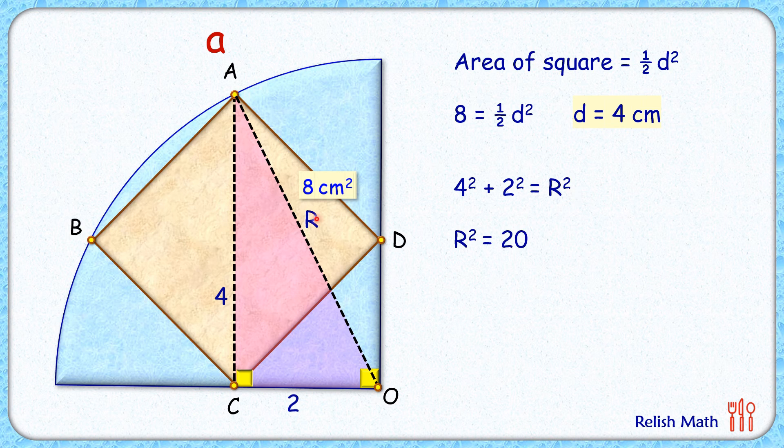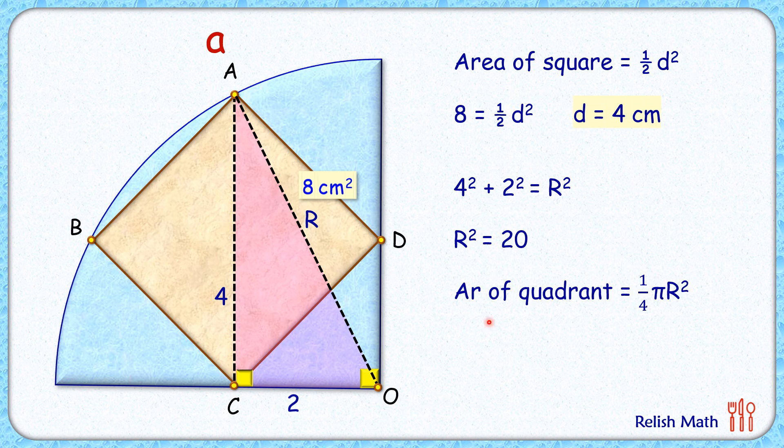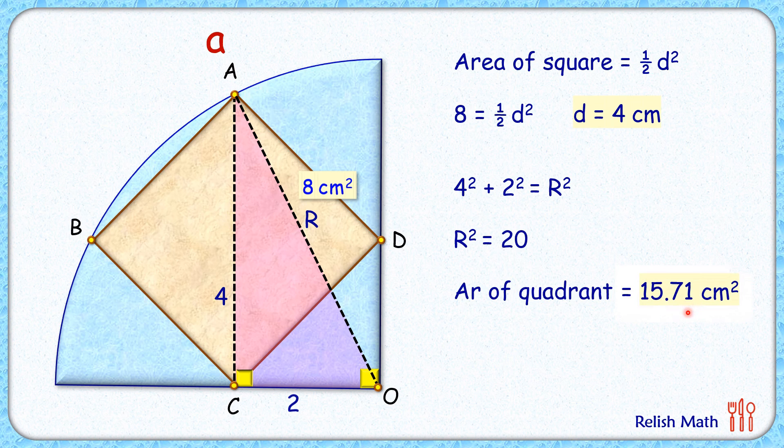Area of this quadrant is one-fourth of pi R squared. Putting the value of R squared as 20 and solving it, we get area of quadrant as 15.71 centimeter square, and that's our answer.